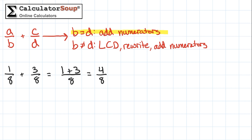This fraction can be reduced, so let's simplify it. The greatest common factor of 4 and 8 is 4, so divide both the numerator and denominator by 4. 4 divided by 4 is 1, and 8 divided by 4 is 2, so our simplified answer is 1 half.